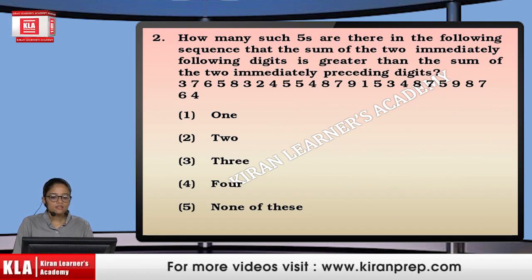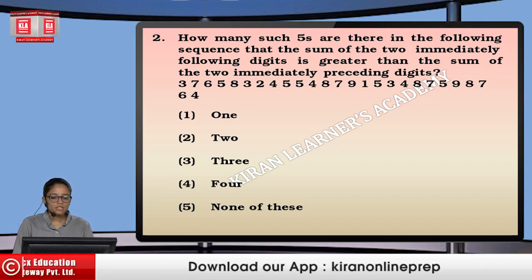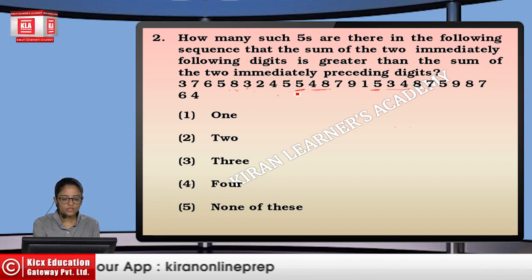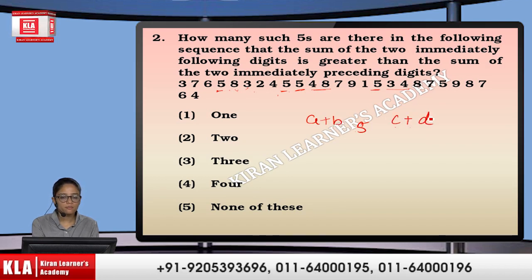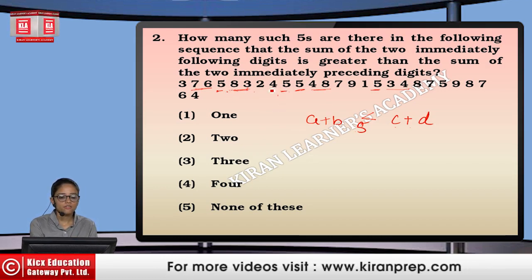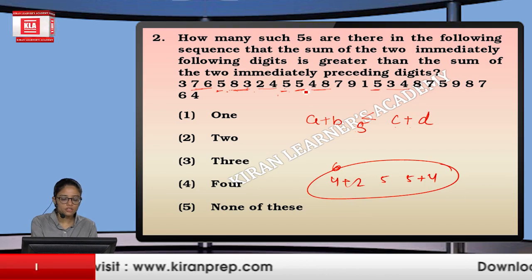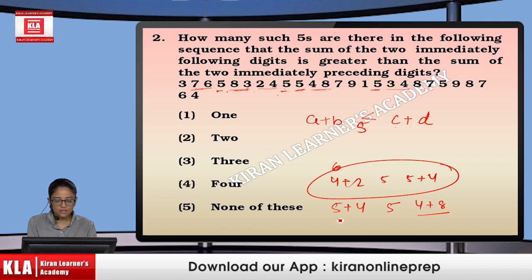Next question: how many such fives are there in the following sequence where the sum of the two immediately following digits is greater than the sum of the two immediately preceding digits? We look for each 5 in the sequence. For the first 5, the preceding sum is 13 and following is 11 — condition not satisfied. For the next 5, preceding is 4+2=6 and following is 5+4=9 — this works, first valid combination. For the next, preceding is 5+4=9 and following is 4+8=12 — this also works, second combination.